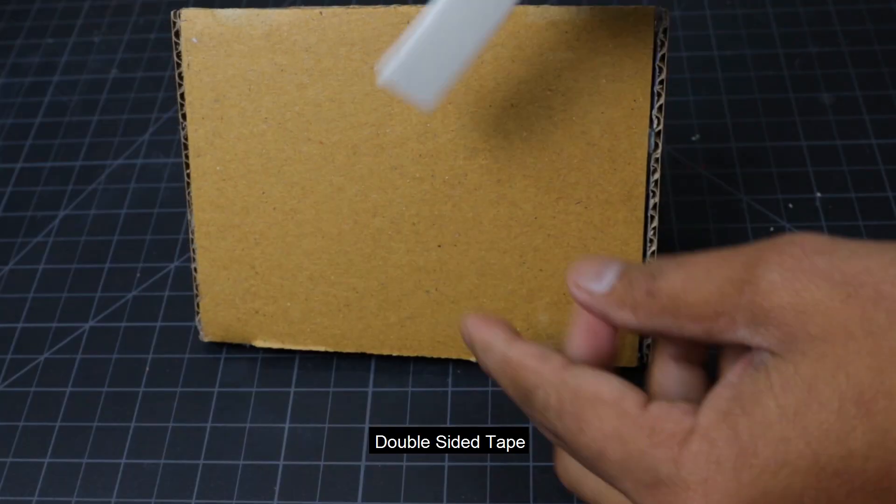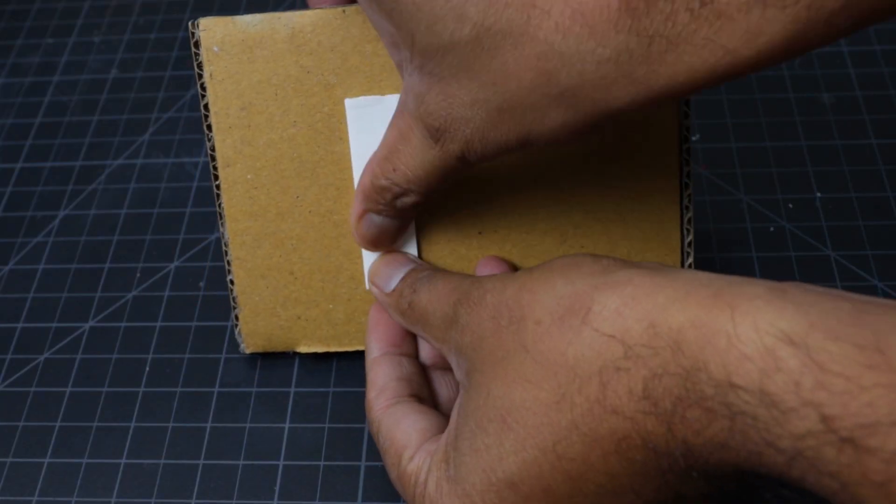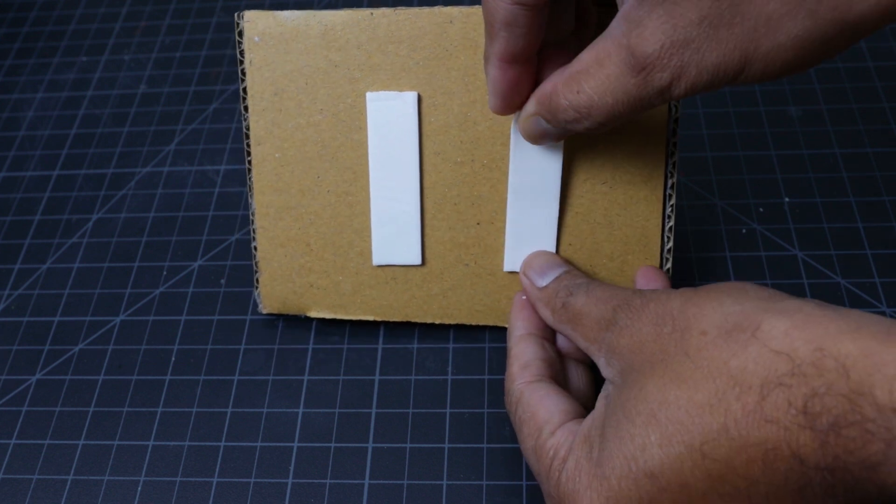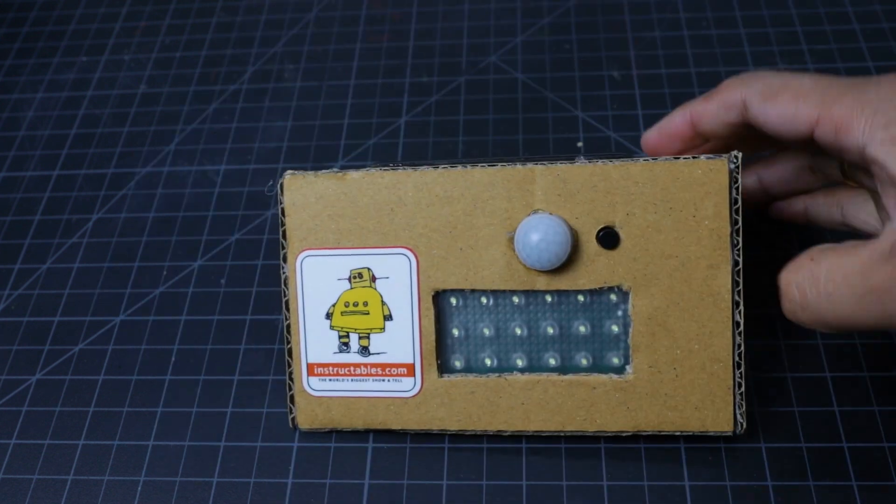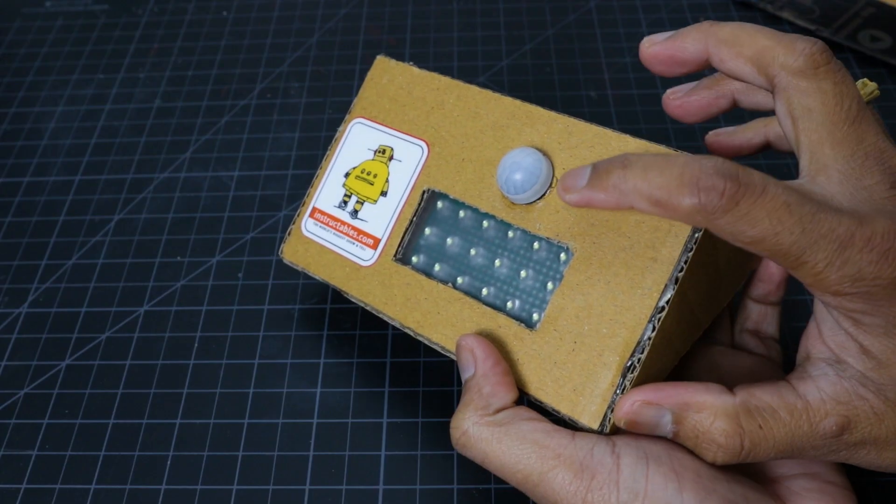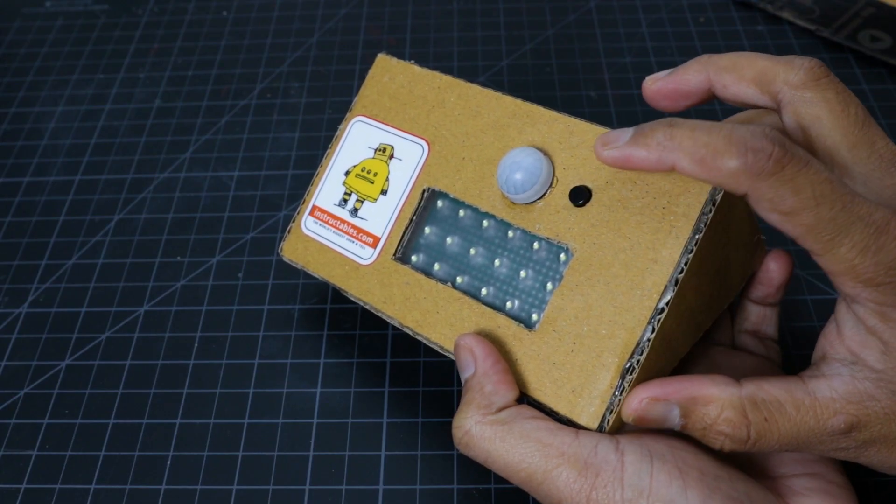I used double-sided tape to mount the light. You can change the mode by pressing this push button.